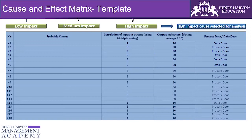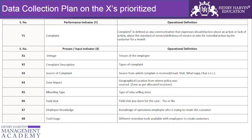The next step is to categorize the causes as either a 'process door' or a 'data door.' Data door causes are those for which we would be able to get data for that particular cause. Process door causes are those for which we won't be able to get the data. We then prepare a data collection plan on the high-impact data door causes, listing all such causes and collecting data for analysis.